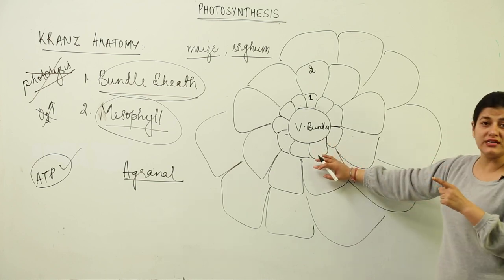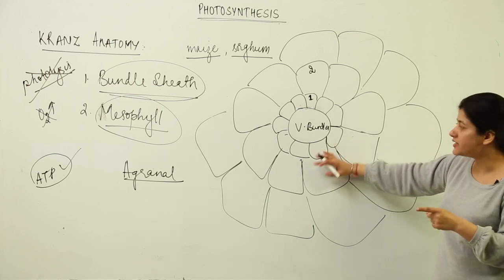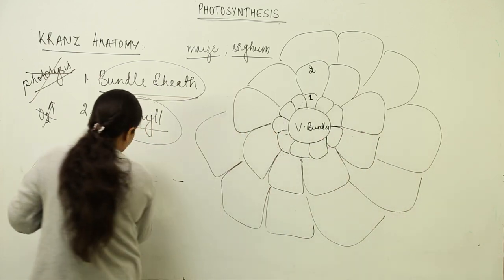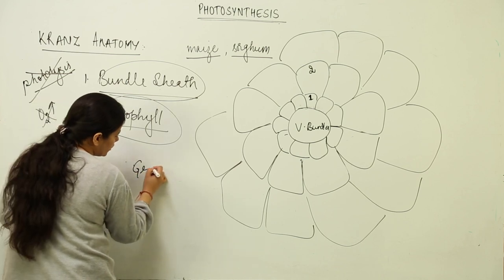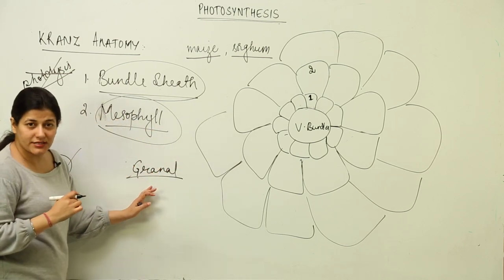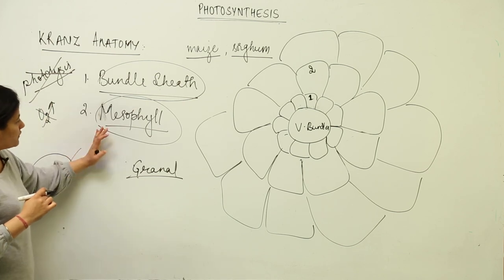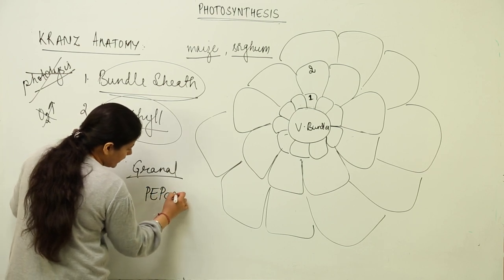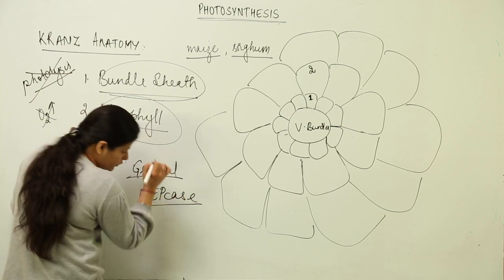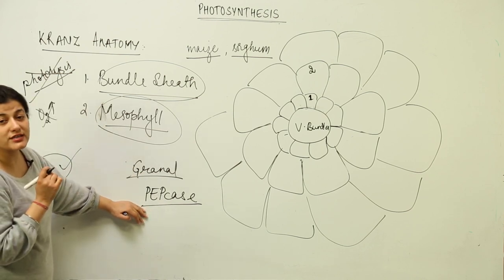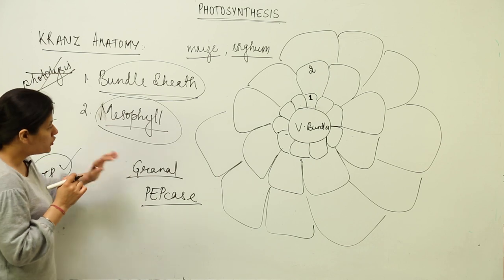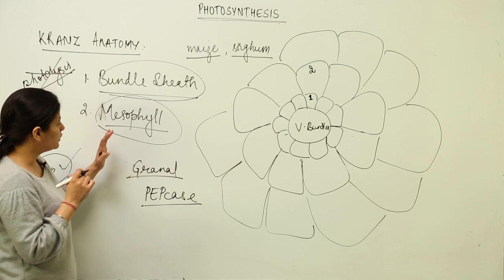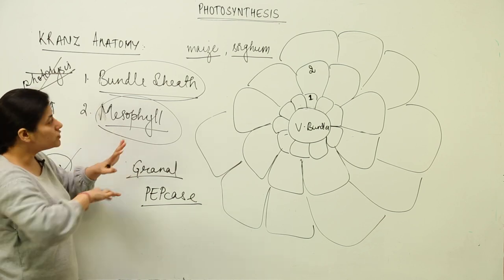These bundle sheath cells have Rubisco inside them. The mesophyll cells have chloroplasts with well-developed grana. Additionally, in the mesophyll cells, the chloroplasts have an additional enzyme — PEP carboxylase (phosphoenolpyruvate carboxylase). This enzyme is responsible for fixation of carbon dioxide. So Rubisco is present inside the bundle sheath cells, and PEP carboxylase is present inside the chloroplasts of mesophyll cells.